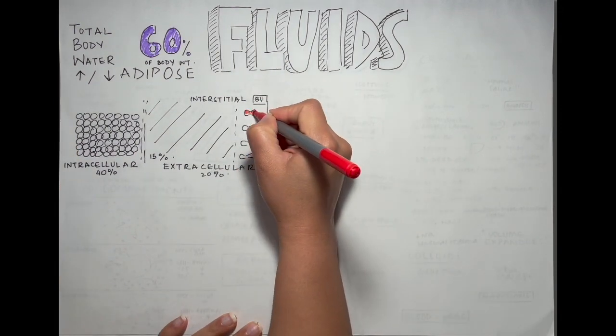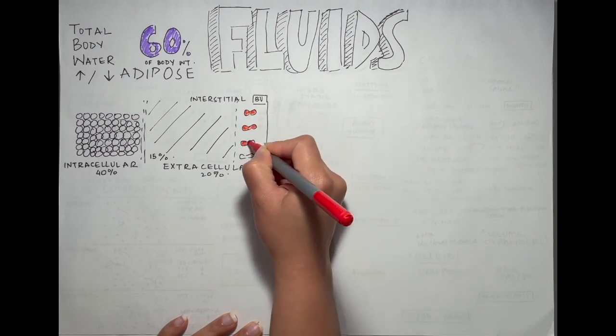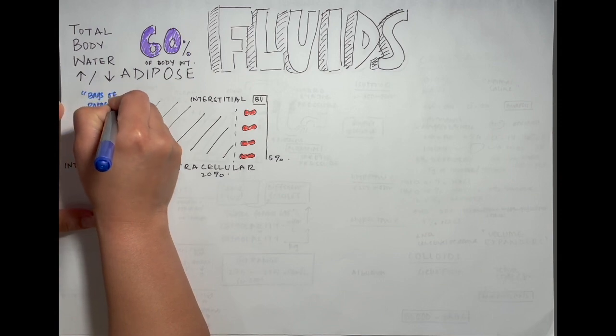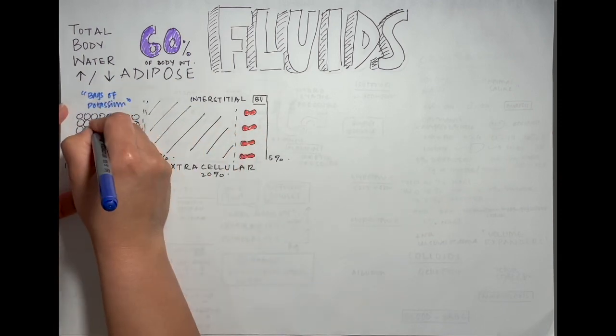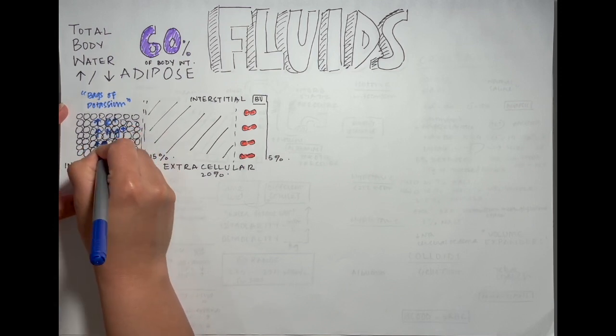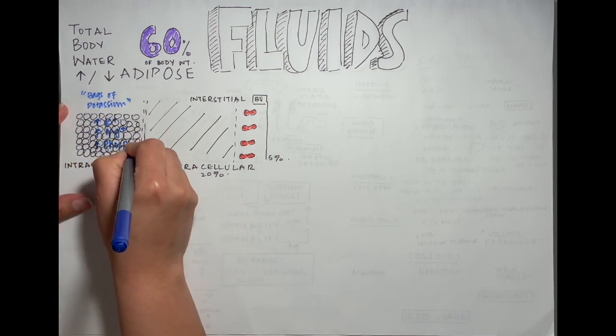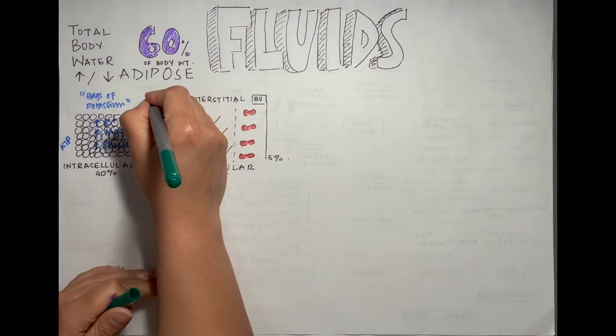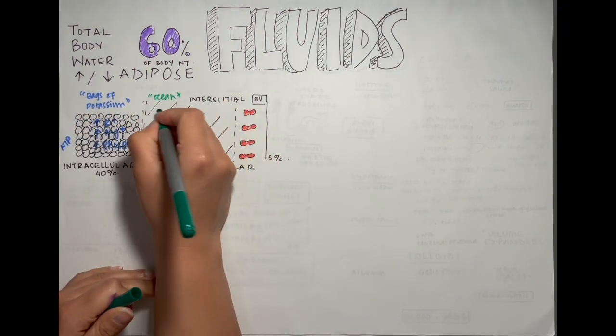The compartments share water but they are different in electrolytes. Cells, remember, are bags of potassium. They also contain magnesium and lots of phosphates in the form of ATP, ADP, and AMP. Whereas the interstitium is the ocean that we evolved in, so it contains a large amount of sodium and chloride and less potassium.